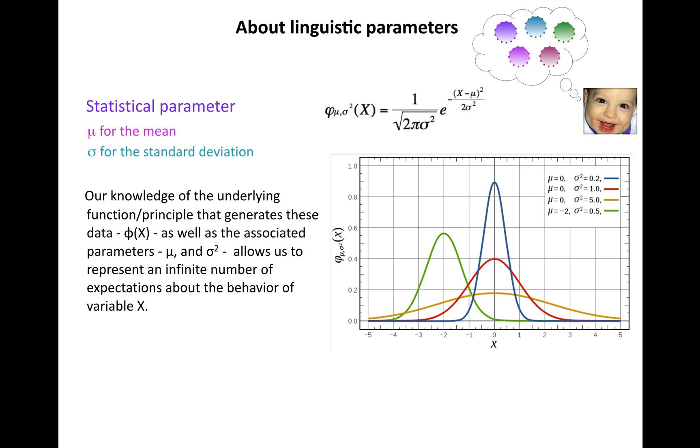Our knowledge of the underlying function or principle is important. We need that, as well as what the associated parameters are and how they figure into that description. Once we have that, that allows us to represent an infinite number of expectations about the behavior of this thing we're interested in, even though they're all constrained to basically